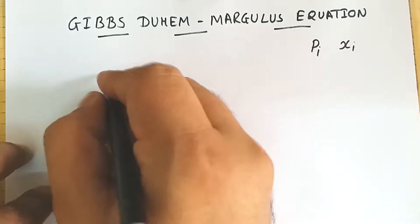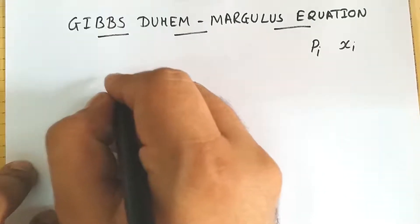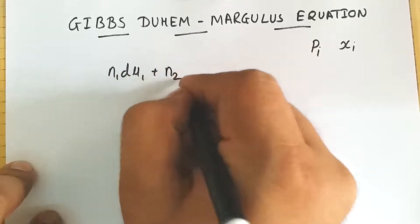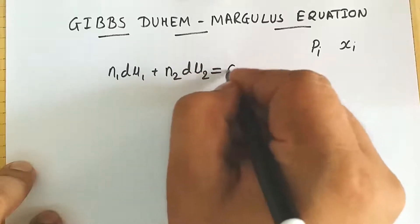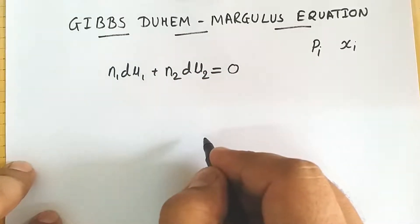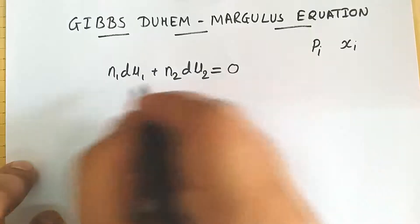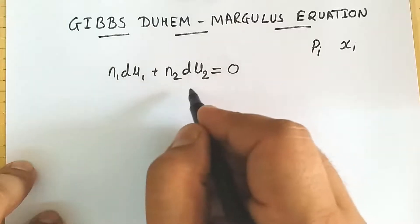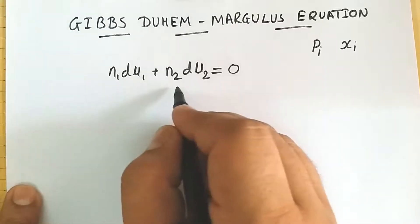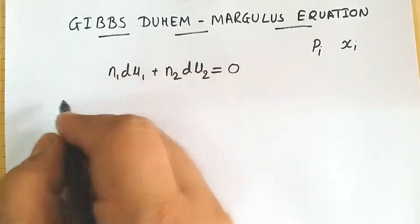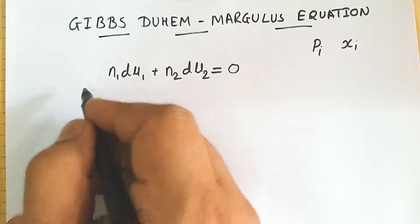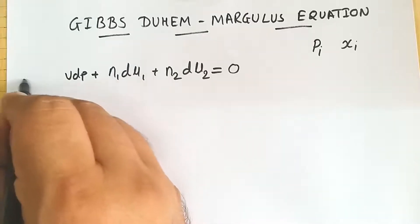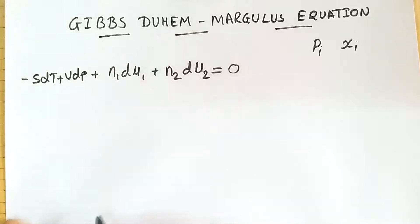We all know the Gibbs-Duhem equation, and that is: n1 dμ1 plus n2 dμ2 equals 0. This is our Gibbs-Duhem equation. If you want me to derive this equation, kindly write in the comments so that I will make a separate video on it. There is also a generalized relation that includes vdP and sdT terms.